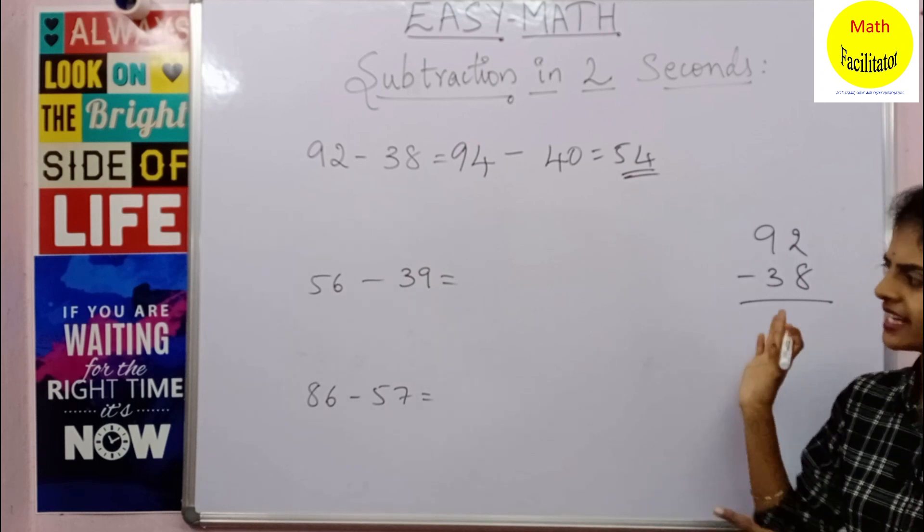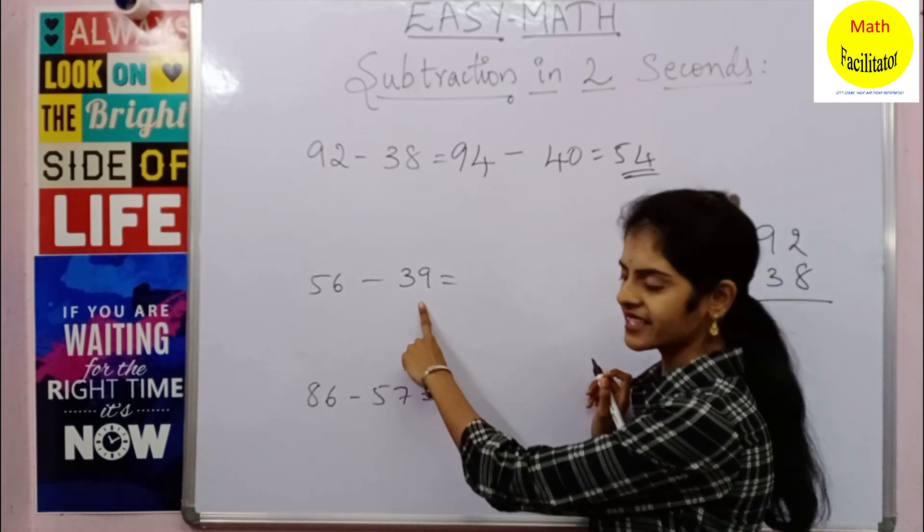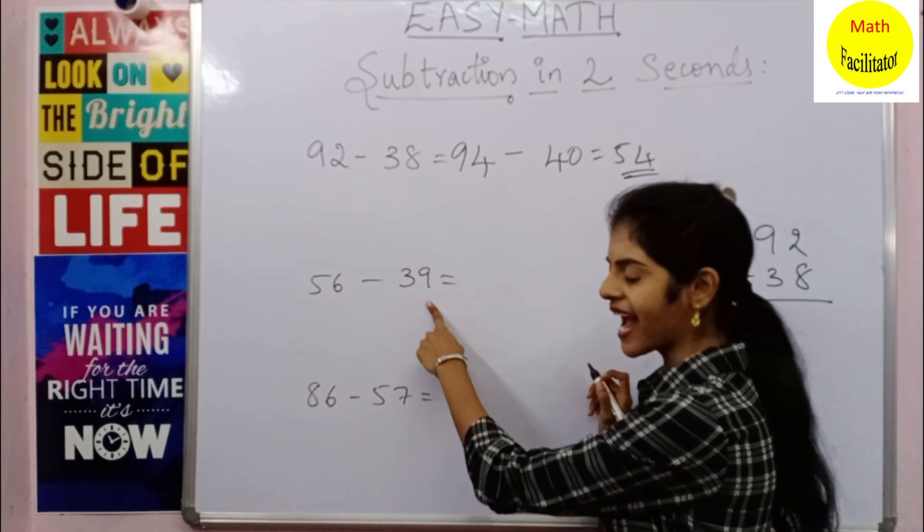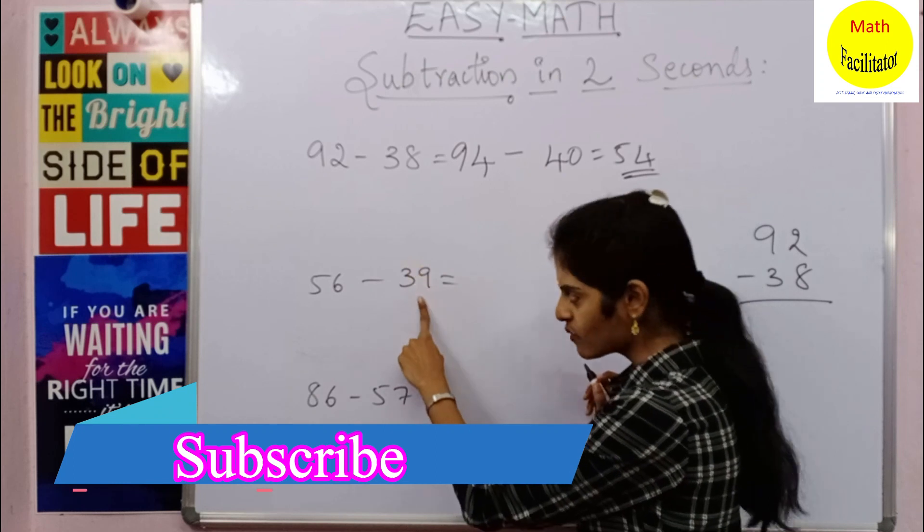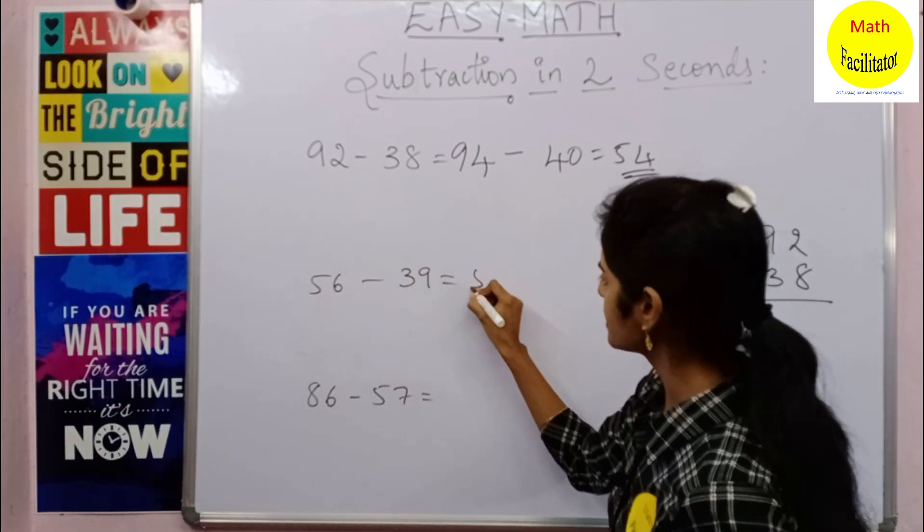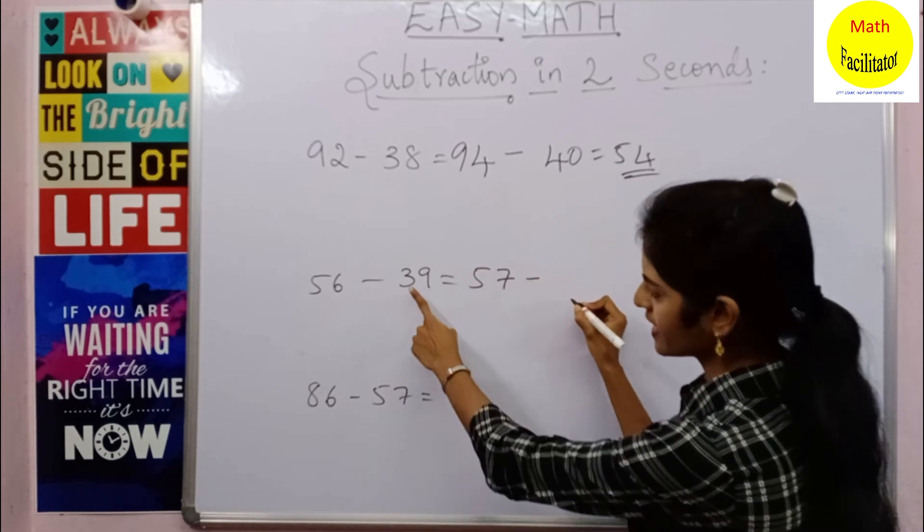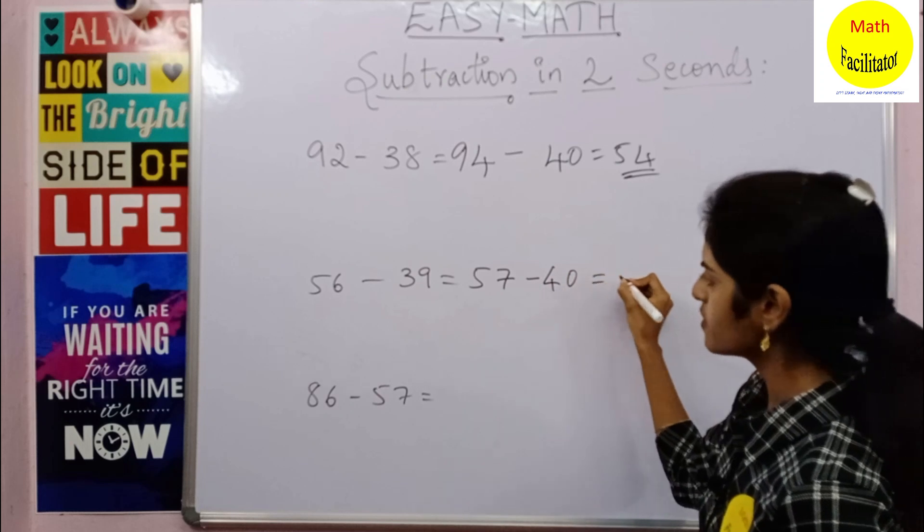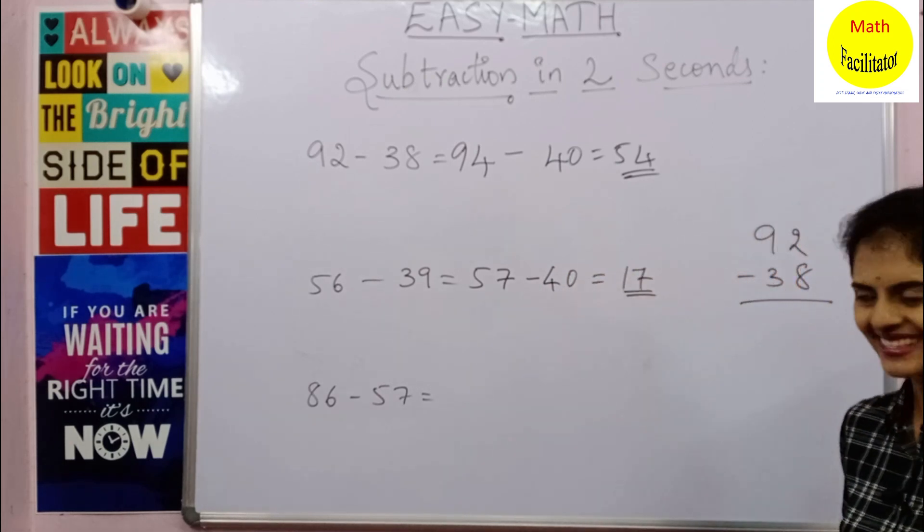Now let us take another example, it will be easier for you. 56 minus 39. 39 is closer to 40, so you'll add 1 to get 40. When you're adding 1 to the second number, you'll add 1 to the first number also. So 56 becomes 57. Now 57 minus 40 is nothing but 17, very simple.